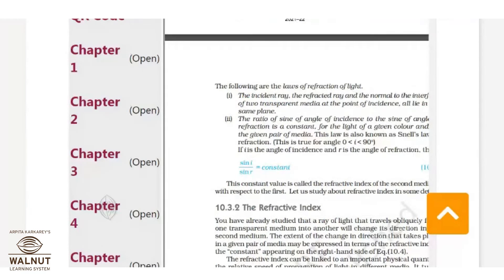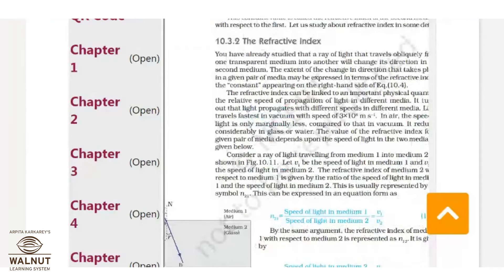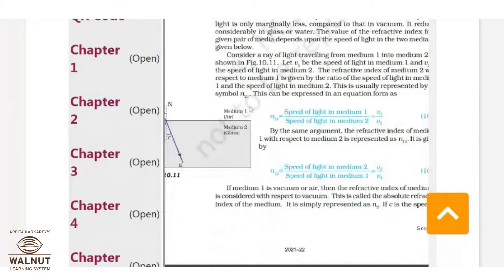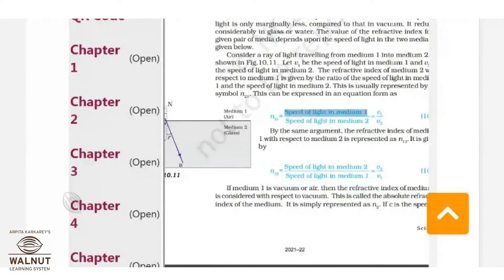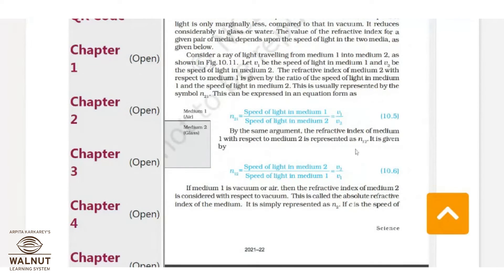We have also learned the laws of refraction. What is the refractive index? When light changes its medium — air is a transparent medium and glass is also a transparent medium — the speed of light in air will be different from the speed in glass. If you take the ratio of the speed of light in medium one (air) to the speed of light in medium two (glass), denoted by v1 and v2, this ratio is always constant, and it is called the refractive index.